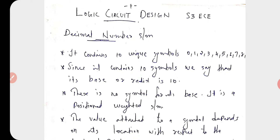We begin our study of the number systems with the familiar decimal number system. The decimal number system contains 10 unique symbols, that is 0 to 9.